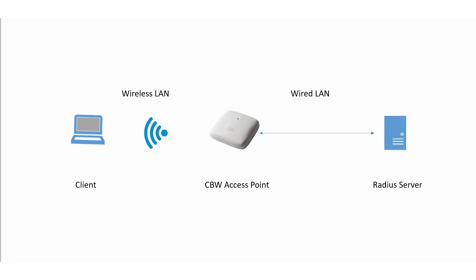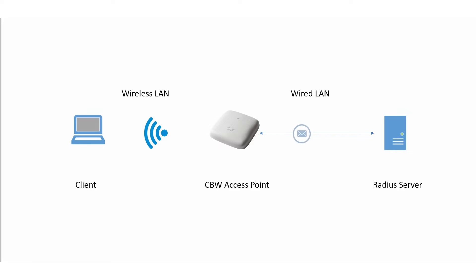I'll start by demonstrating how the process works. The CBW access point sends authentication requests to the RADIUS server when a client attempts to authenticate. The server sends an accept message back to the device if it is properly configured to have the device as a client. If not, a rejection message is sent. Even though Cisco does not support the configuration of RADIUS servers, there are many options available online.